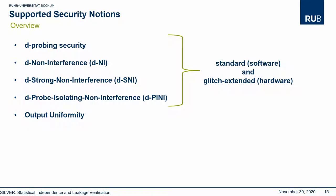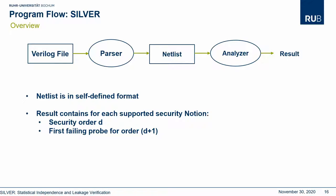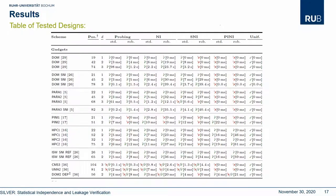Let us give you an overview of the verification flow for a hardware design using our tool. The engineer defines their design using VHDL or Verilog, then produces a Verilog netlist synthesized for example by the Synopsys Design Compiler. The resulting Verilog netlist file is then passed into a custom netlist file, which is the input to our analyzer. This analyzer performs the checks and outputs the result. The result contains, for each supported security notion, the security order D and the first failing probe for order D plus 1.